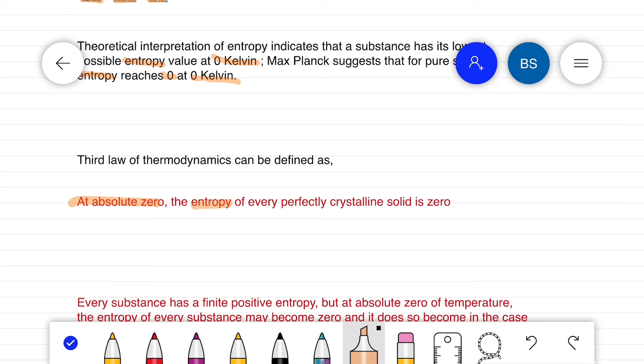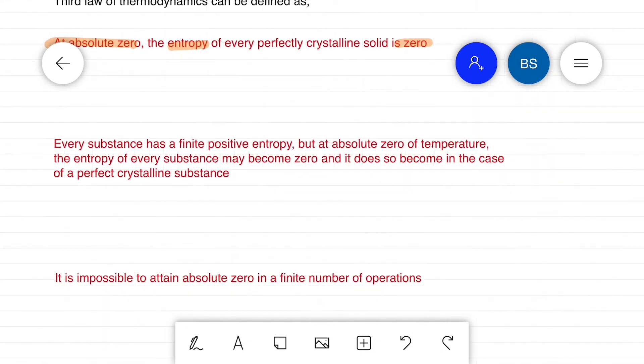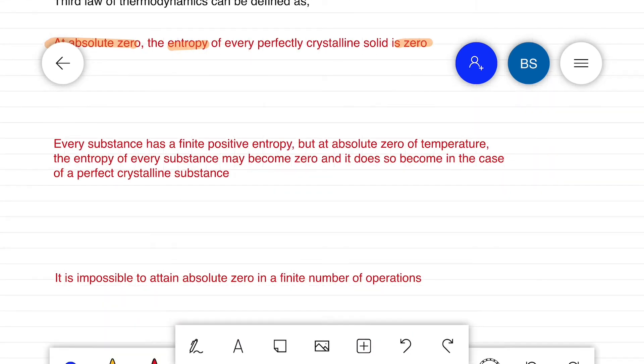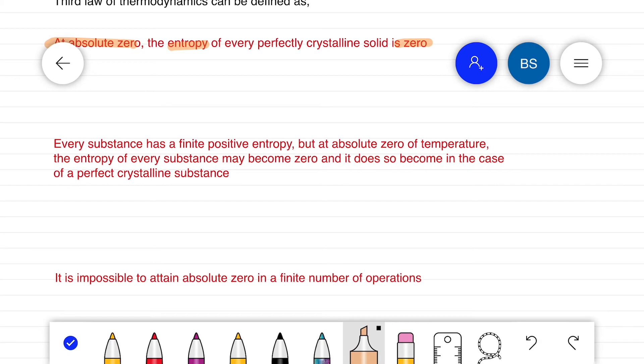However, G.N. Lewis and M. Randall have written a third law of thermodynamics. Every substance has a finite positive entropy, but at absolute zero of temperature, the entropy of every substance may become zero, and it does so become in the case of a perfect crystalline substance.